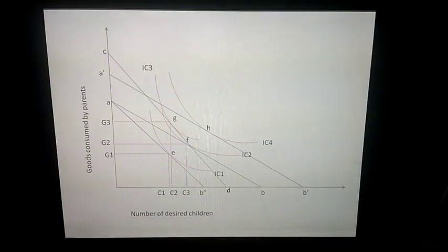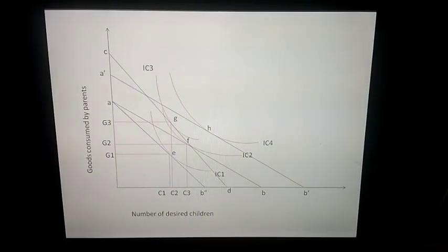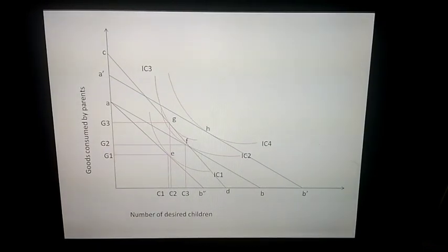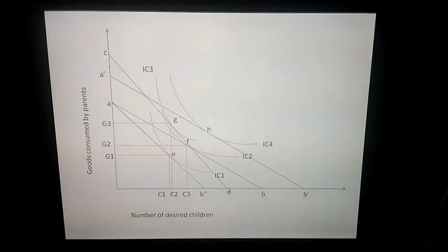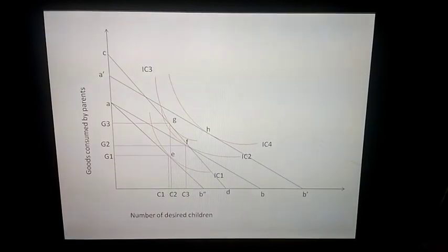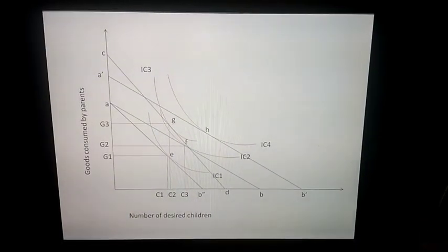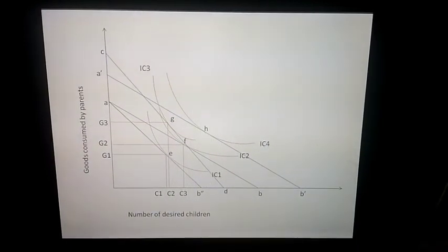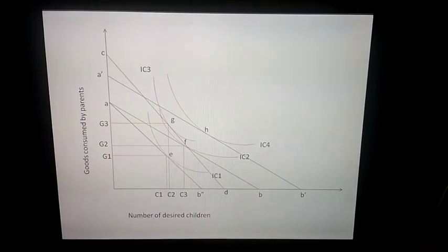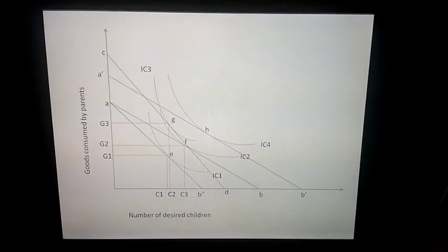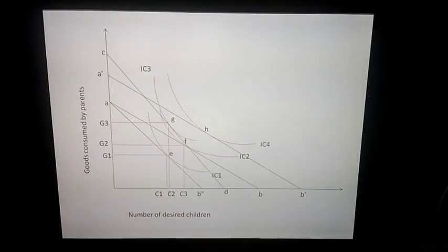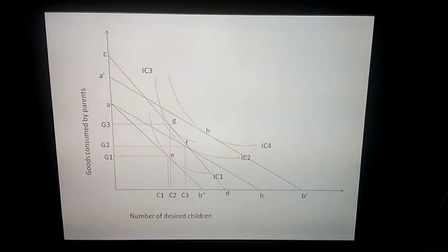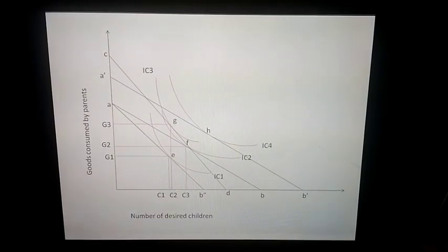So we have seen how at different points the demand for goods and children varies. This is how the microeconomic household theory of fertility is visualized — it shows how government policies can impact the number of children a household can have. I hope you enjoyed this video; if you liked it, do share it with your friends and don't forget to subscribe.